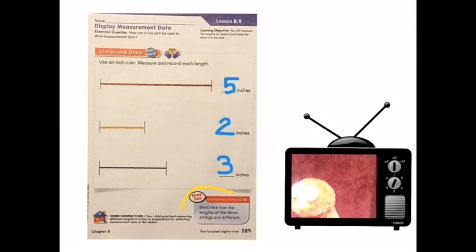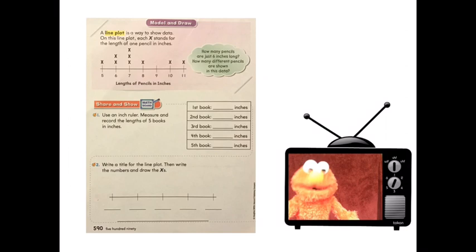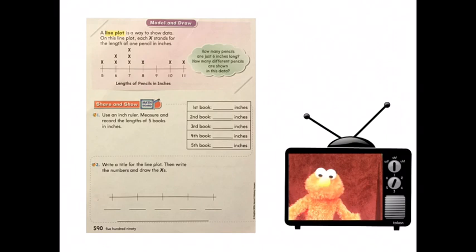Now let's take a look at the math talk. What's it say down there? It says, describe how the length of the three strings are different. Really? That's a question? It's obvious. They're different lines. Some are short and some are long. Who writes these questions? Anyway, let's turn to the next page. Okay, boys and girls. Now you have turned to page 590. Let's take a look at the top light purple area at the top of the paper. It says a line plot is a way to show data. On this line plot, each X stands for the length of one pencil in inches.